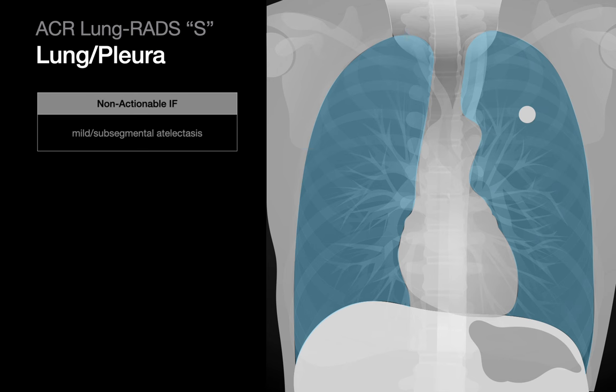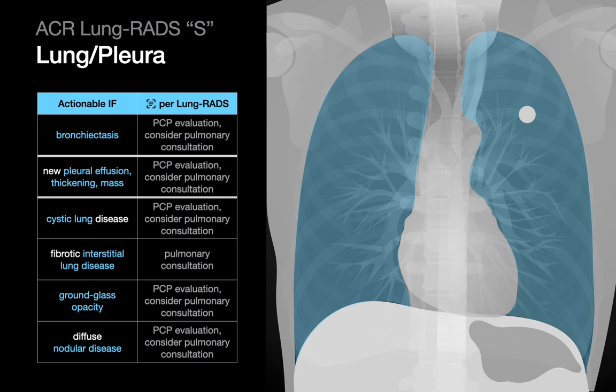In the lungs intrapleural, subsegmental atelectasis is defined by LungRADS as non-actionable, while bronchiectasis, pleural disease, cystic lung disease, fibrotic ILD, ground glass lung opacities, and diffuse nodular lung disease may be actionable. On this table, the standard LungRADS management recommendations assigned to each actionable incidental finding appear in the right column.